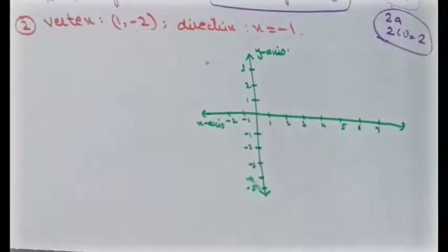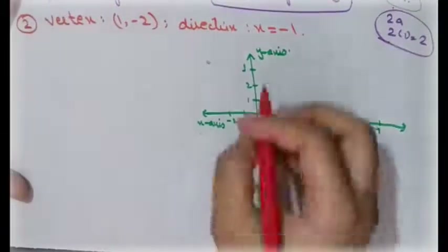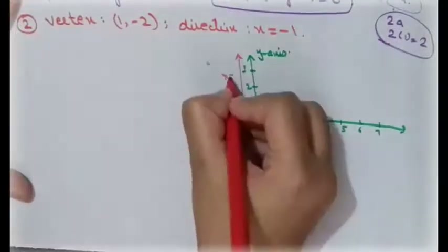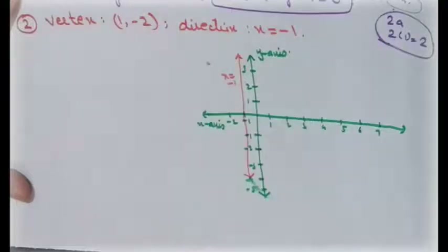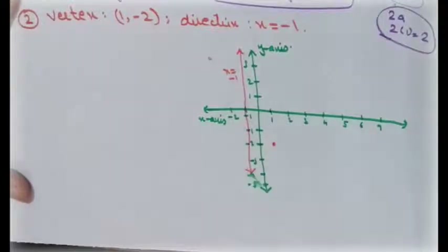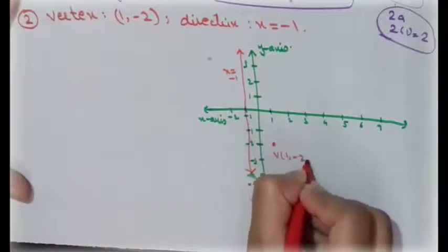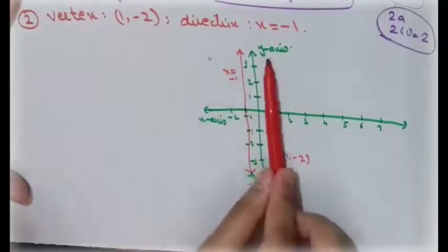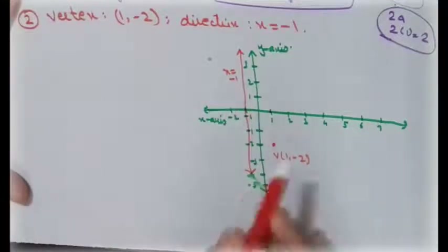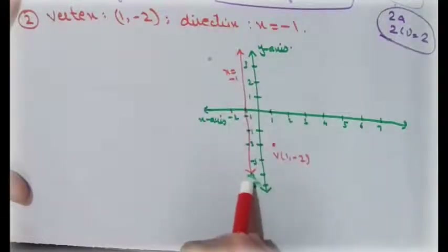For the second example, we again plot on a graph first. The directrix line is x = −1, drawn as a vertical line. In the x-axis there is a point at −1. The vertex point is (1, −2). The parabola opens to the right side, because the focus lies to the right of the vertex and the parabola opens towards its focus.